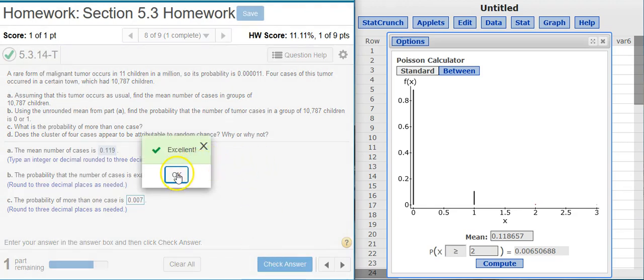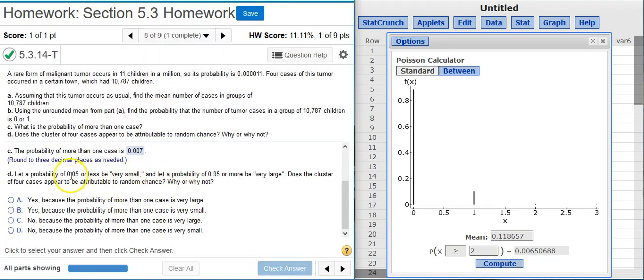Excellent. Now Part D says: Let a probability of 5% or less be very small, and a probability of 95% or more be very large. Does the cluster of four cases appear to be attributable to random chance? Why or why not?